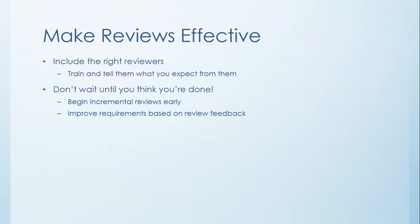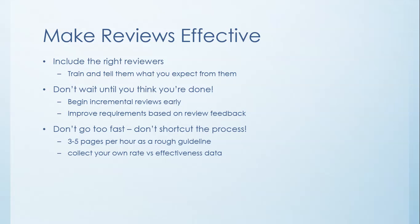You want to improve requirements based on the feedback you've gotten. Make sure each of your reviewers don't go too fast — if you go too fast you're going to end up short-cutting the process. As a rough guideline in industry, most persons go through about 3 to 5 pages per hour. Some people collect their own rate — how fast they are able to review a particular requirement versus how effective they've been, meaning the amount of feedback they're able to give for any one requirement.